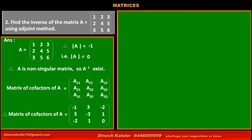Now we have to find the adjoint of matrix A. The adjoint of matrix A is the transpose of the matrix of cofactors. The cofactor matrix has first row [-1, 3, -2], second row [3, -3, 1], and third row [-2, 1, 0]. Since the matrix of cofactors is a symmetric matrix, its transpose is also the same, so the adjoint of A equals the matrix of cofactors.